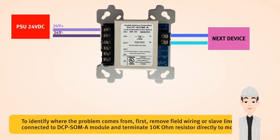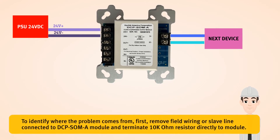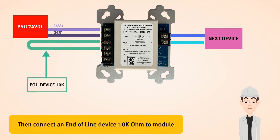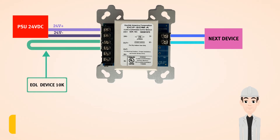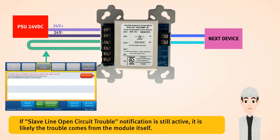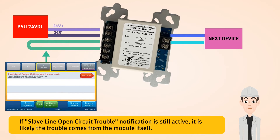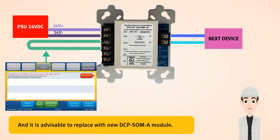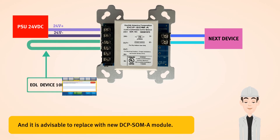To identify where the problem comes from, first remove the field wiring or slave line connected to the DCP SOMA module and terminate a 10k ohm resistor directly to the module. Then connect an end of line device of 10k ohm to the module. If the slave line open circuit trouble notification is still active, it is likely the trouble comes from the module itself, and it is advisable to replace it with a new DCP SOMA module.